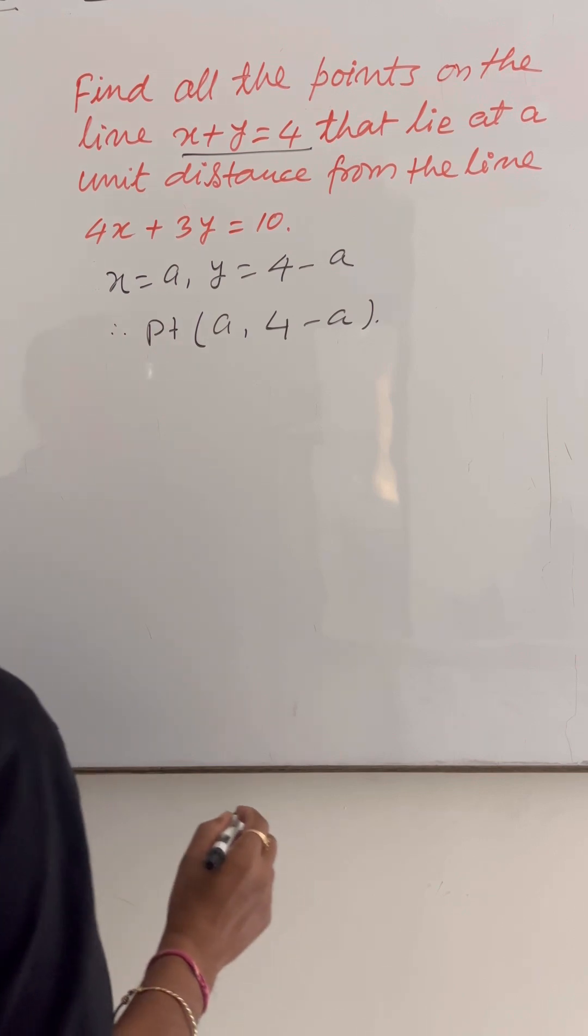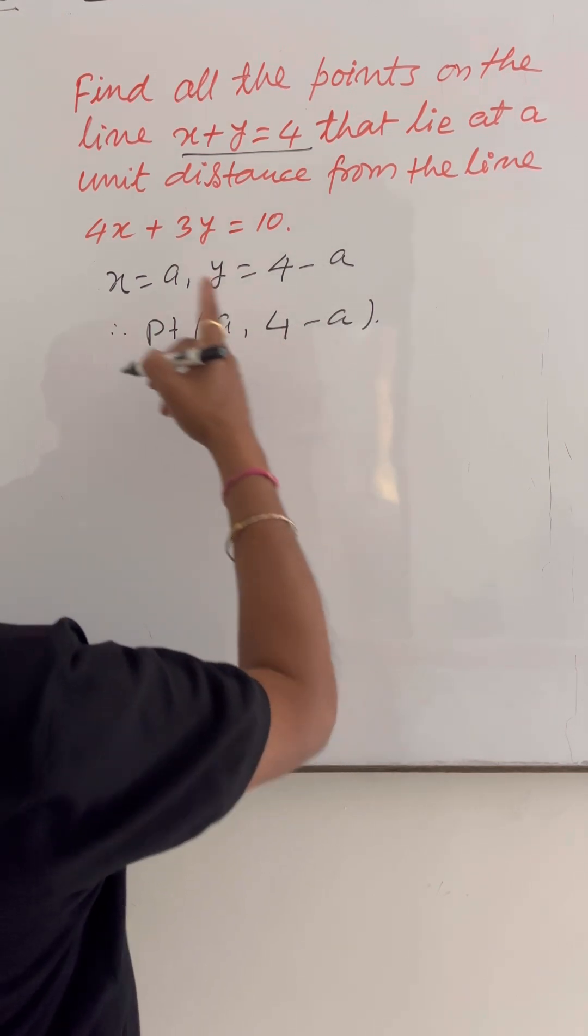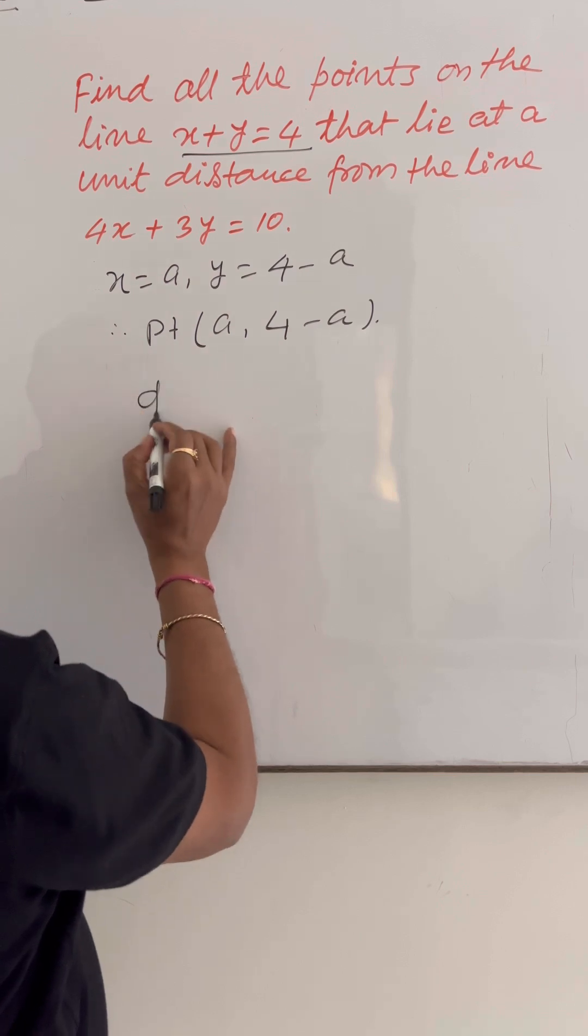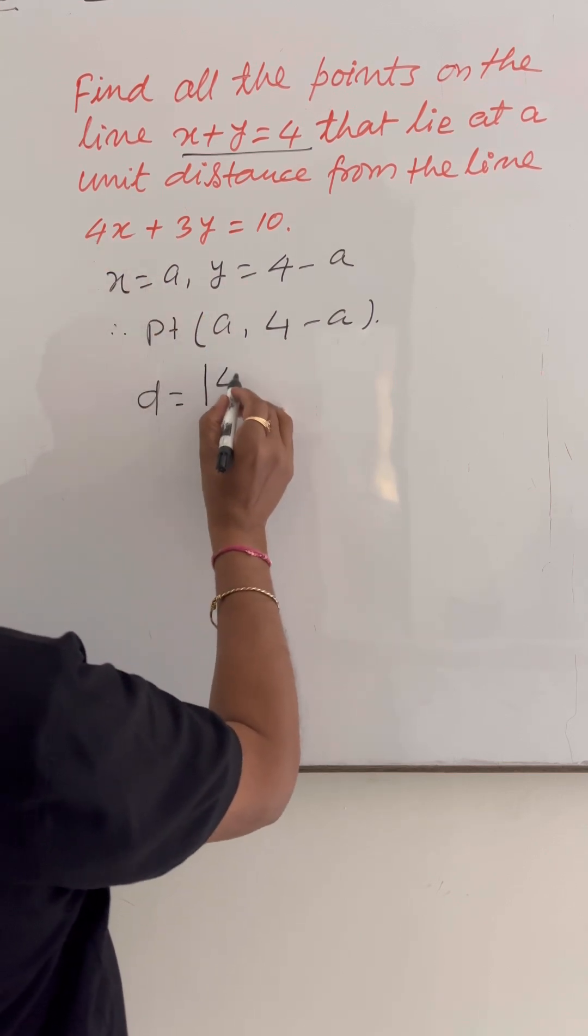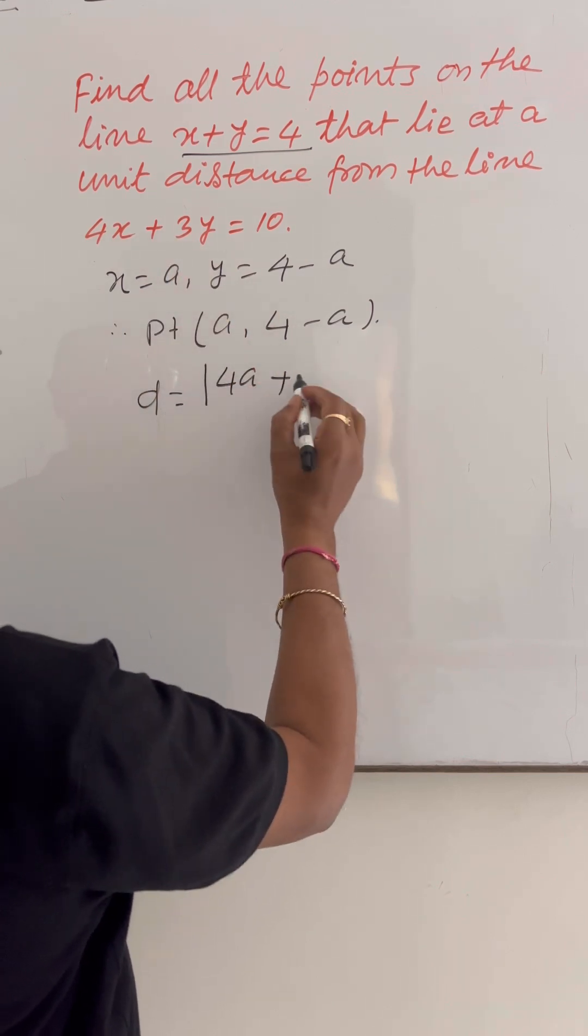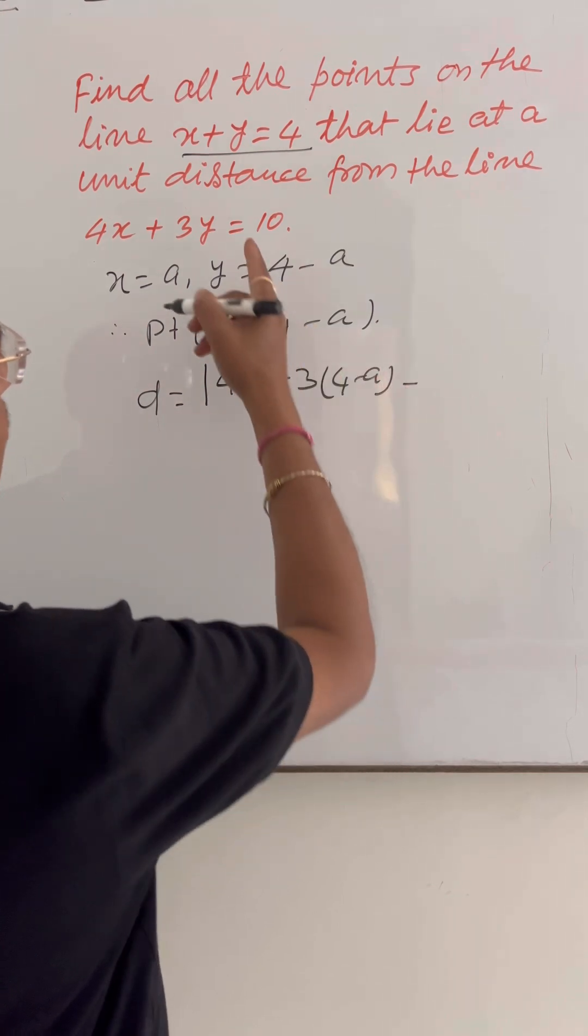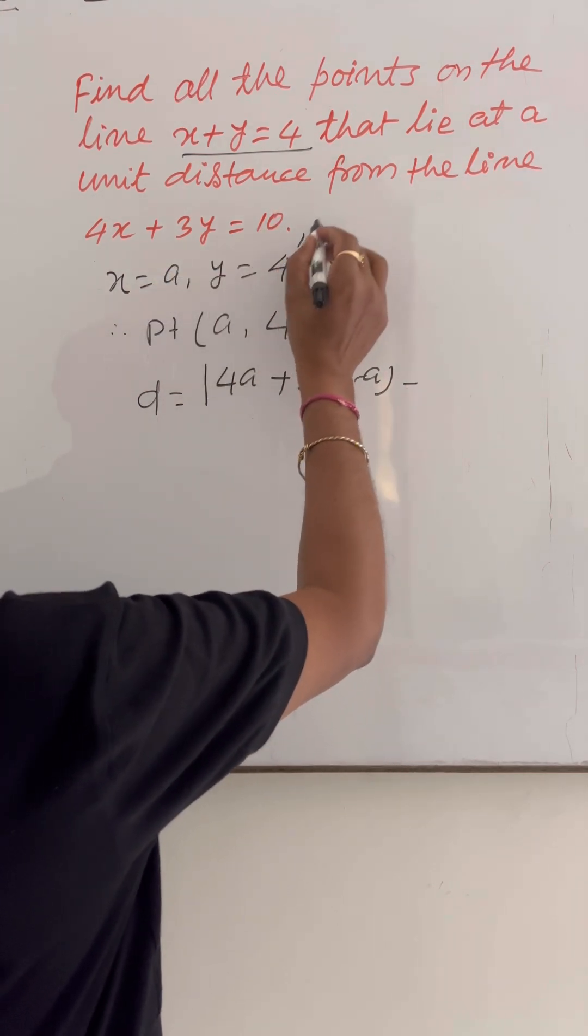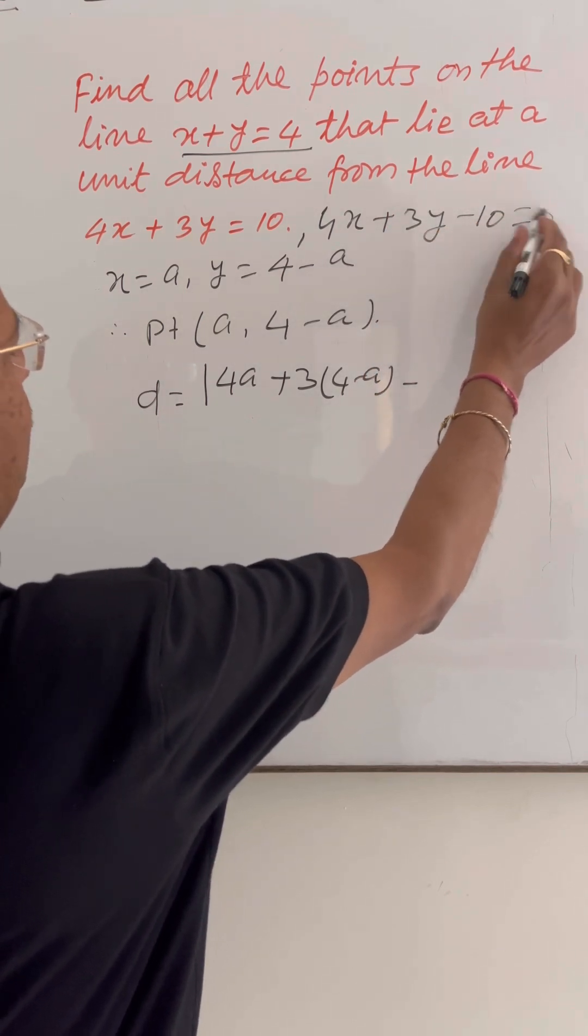Now, we have to find the perpendicular distance of this point from this given line. So, that distance will be modulus of 4 into a, 4a, plus 3 into 4 minus a. So, 3 into 4 minus a, this 10 will be transposed to left side. So, we are getting 4x plus 3y minus 10 is equal to 0.